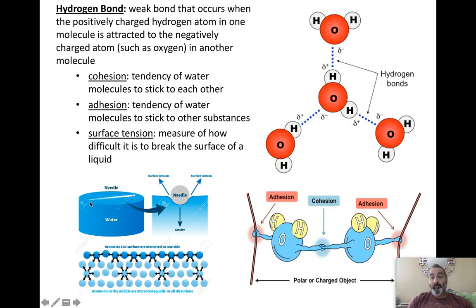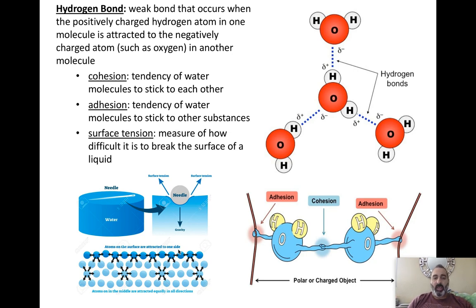Surface tension is what happens on the surface layer of water. When people belly flop, they smack hard against the water because they are breaking a large number of hydrogen bonds all linked together at the same time. If you dive in hands-first, you can penetrate the hydrogen bonds more easily — once you break some, it's easier to break more. When you belly flop, you're trying to break too many at one time, which is why it hurts.